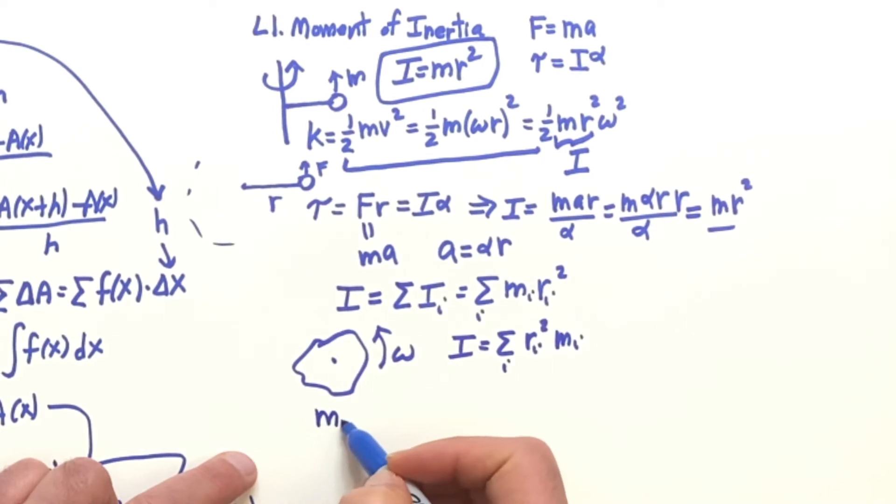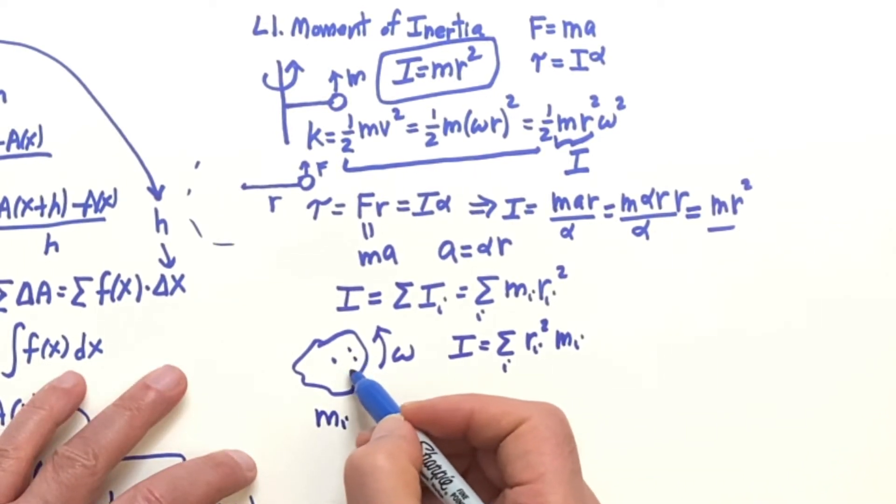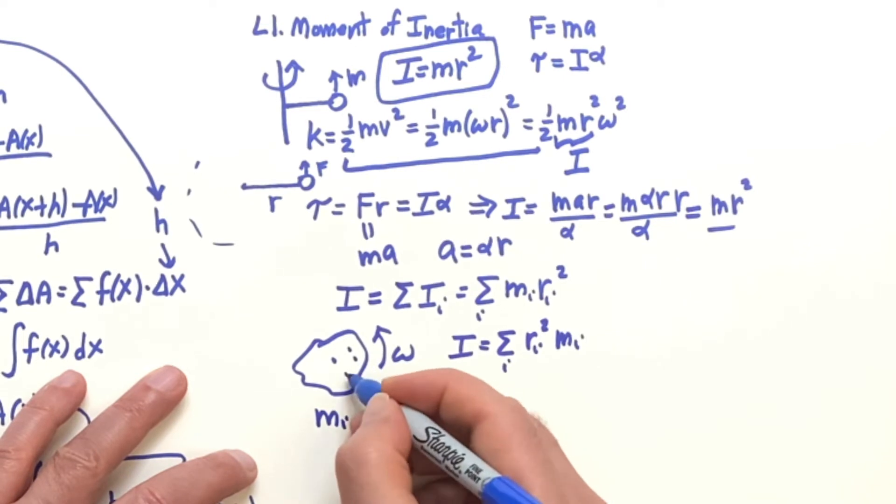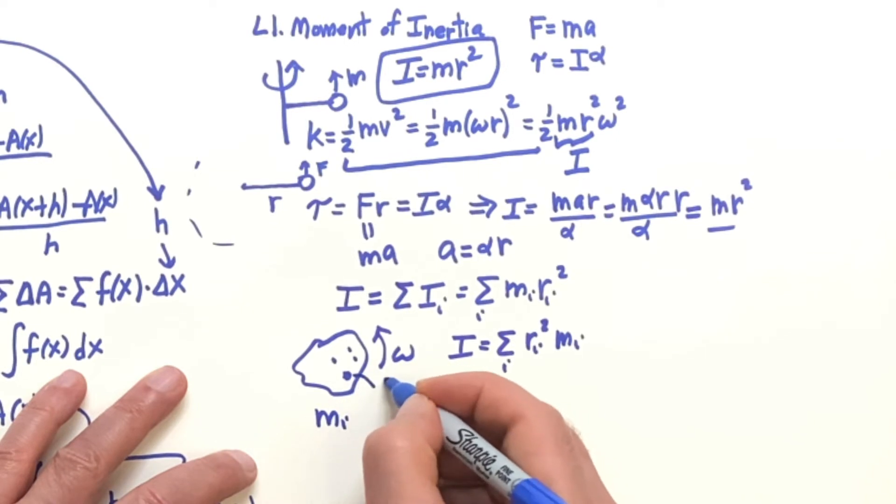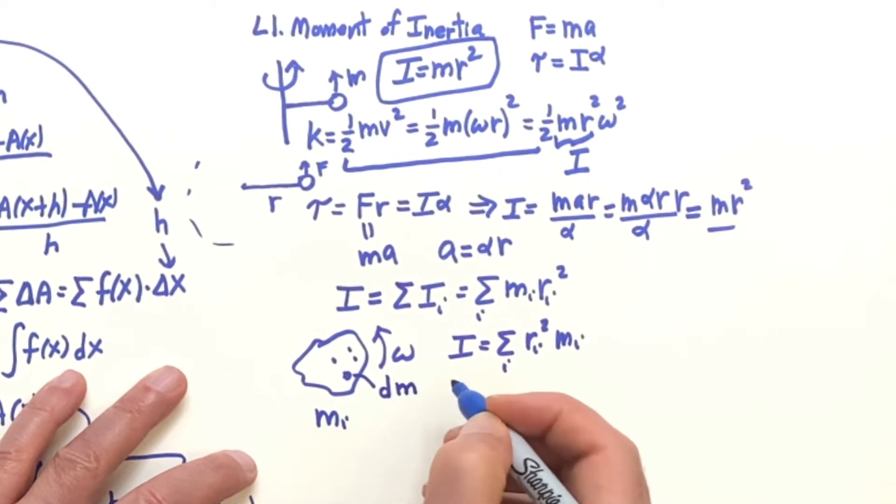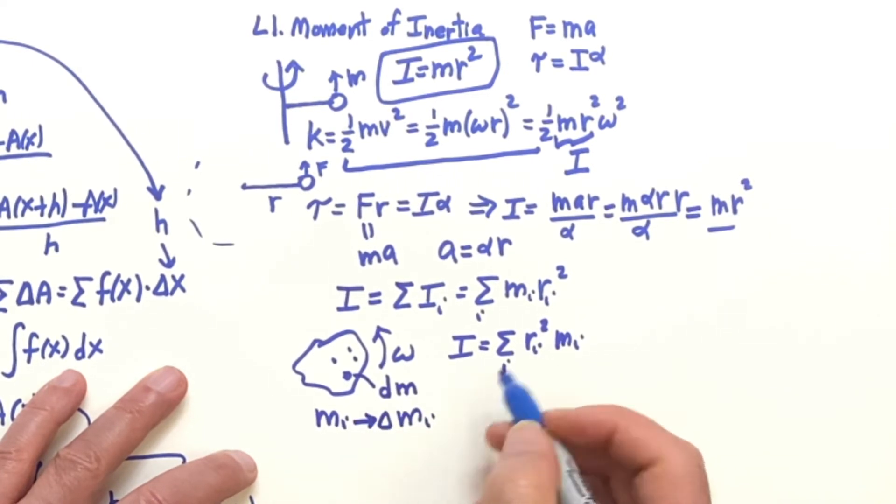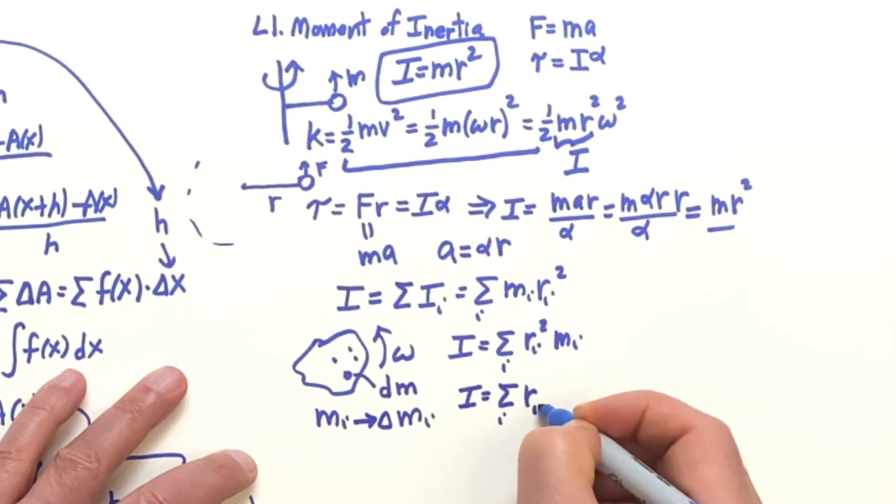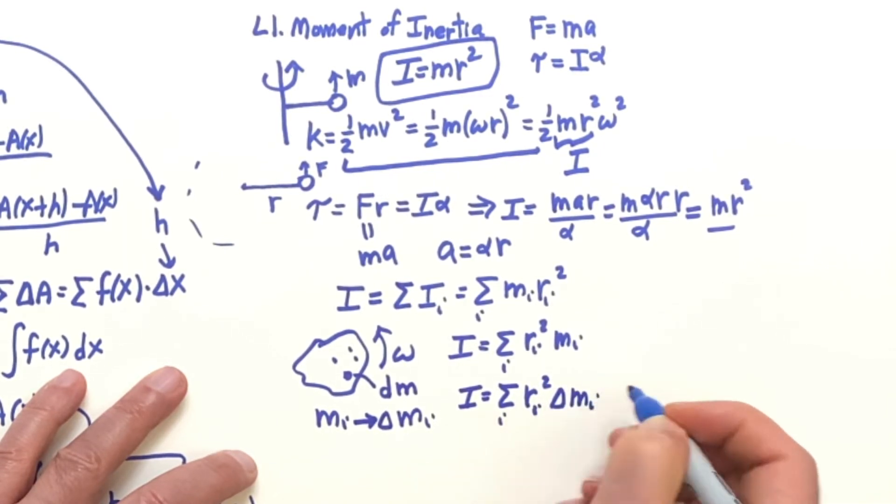And then I want to consider that each of these pieces of mass or small masses, little bits, I'm going to call them, each one, see a delta M, like that. At first you might say, let's call them delta M_i before we take the infinitesimal limit. And then this would be sum of R_i squared and delta M_i, like that.